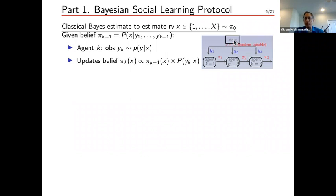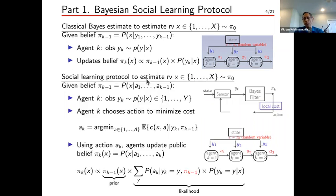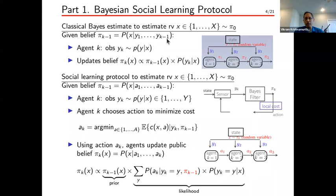Now let's look at a more sophisticated version motivated by behavioral economics: the social learning protocol. Again, we're interested in estimating an underlying state x with prior belief pi zero. The difference now is each agent makes a decision, and we only know the probability of x given the previous decisions — not the previous observations. This relates to some very interesting facts.